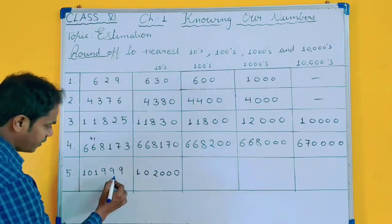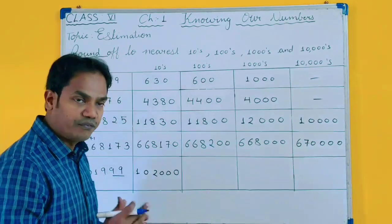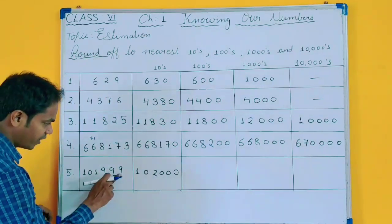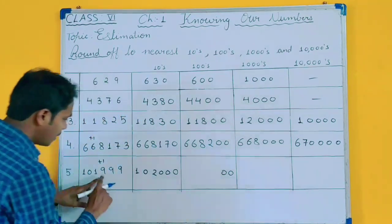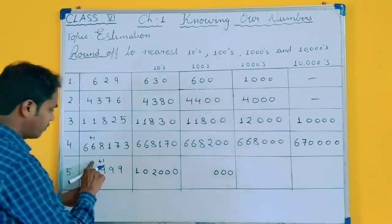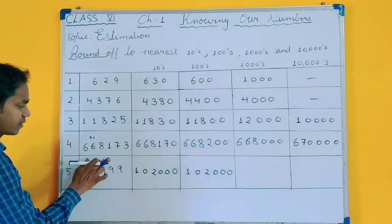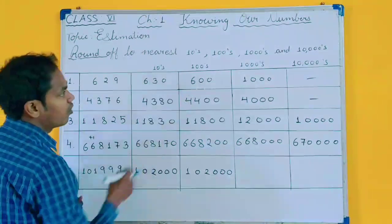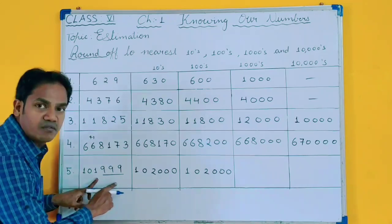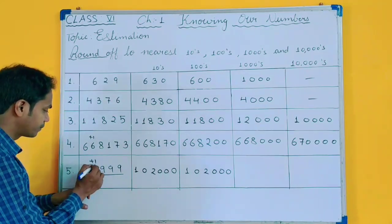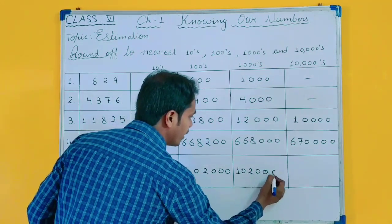For rounding off to 100, you will check the last 2 digits. It is more than 50, so you will do plus 1 here. This 2 will become 0, 9 plus 1 is 10 — carry 1, 1 plus 1 is 2 — giving 10,200. For rounding off to 1000, you will check the last 3 digits. It is more than 500, so you will do plus 1 — giving 10,200 as well.